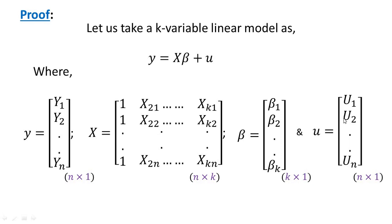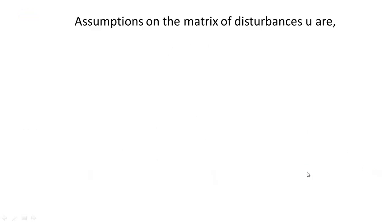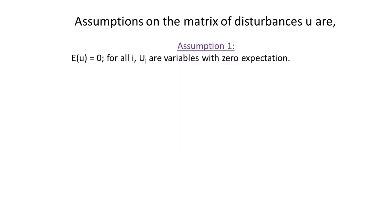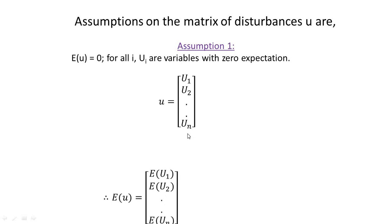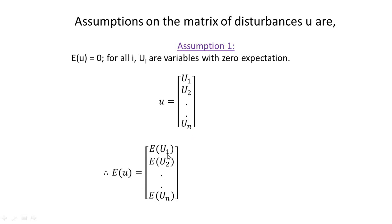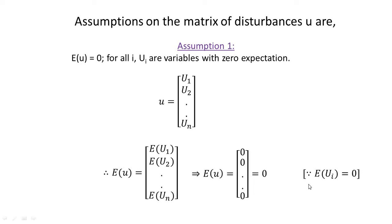We state the assumptions on the disturbance vector u. Assumption 1: The expected value of u is a null matrix. That is, for all i, the u_i's are random variables with zero expectation. Since u is a column vector of u1, u2, up to un, the expected value of u equals [E(u1), E(u2), ..., E(un)]' = 0, a null matrix.